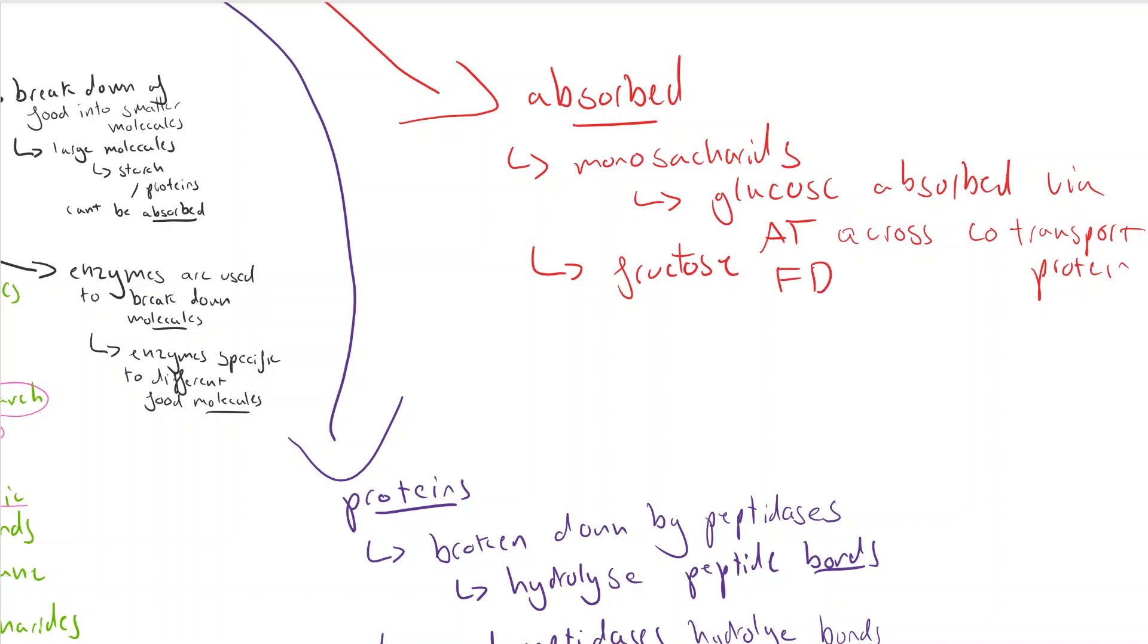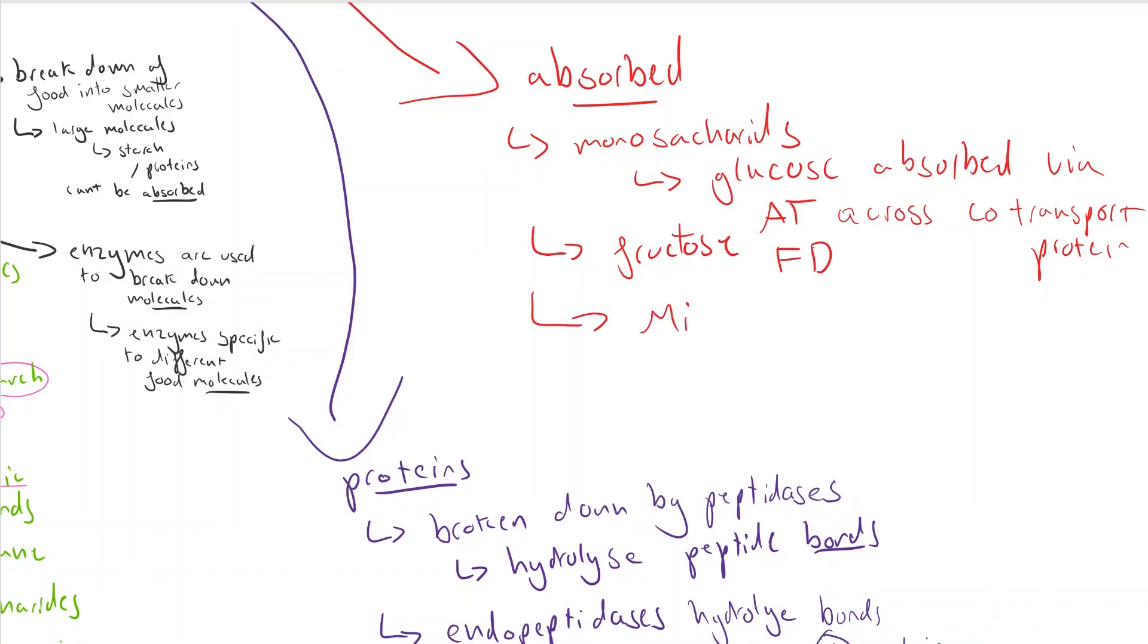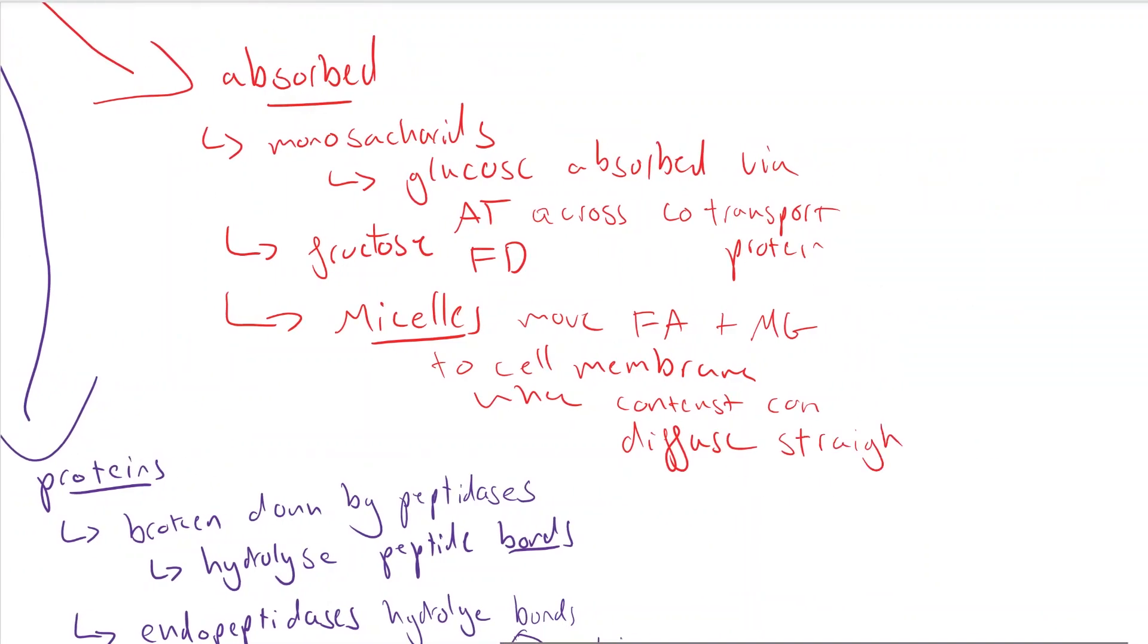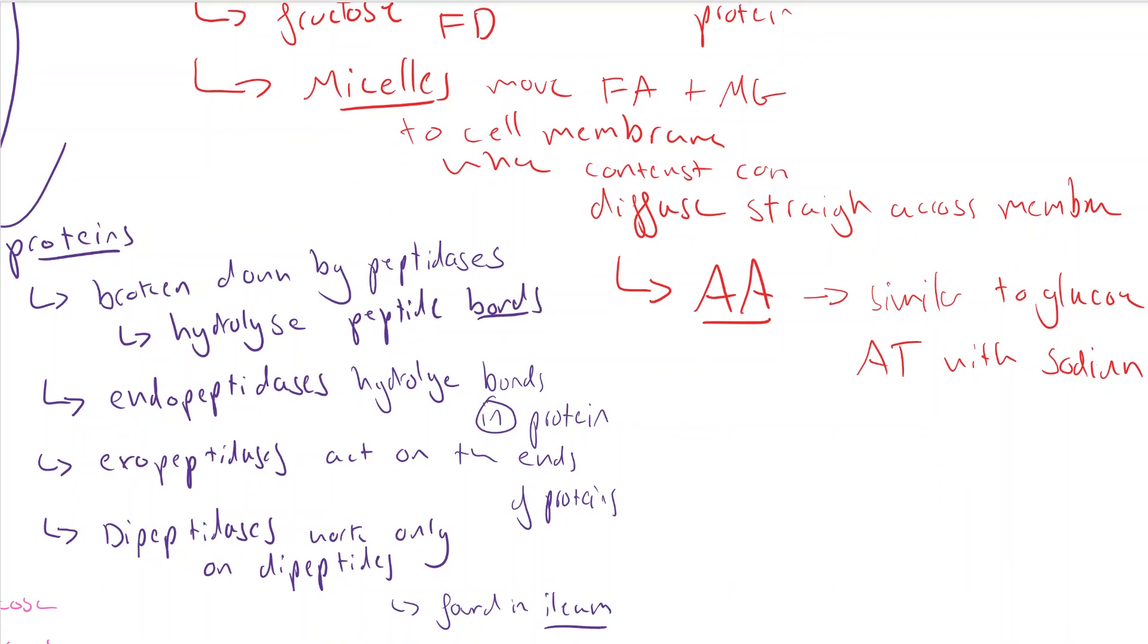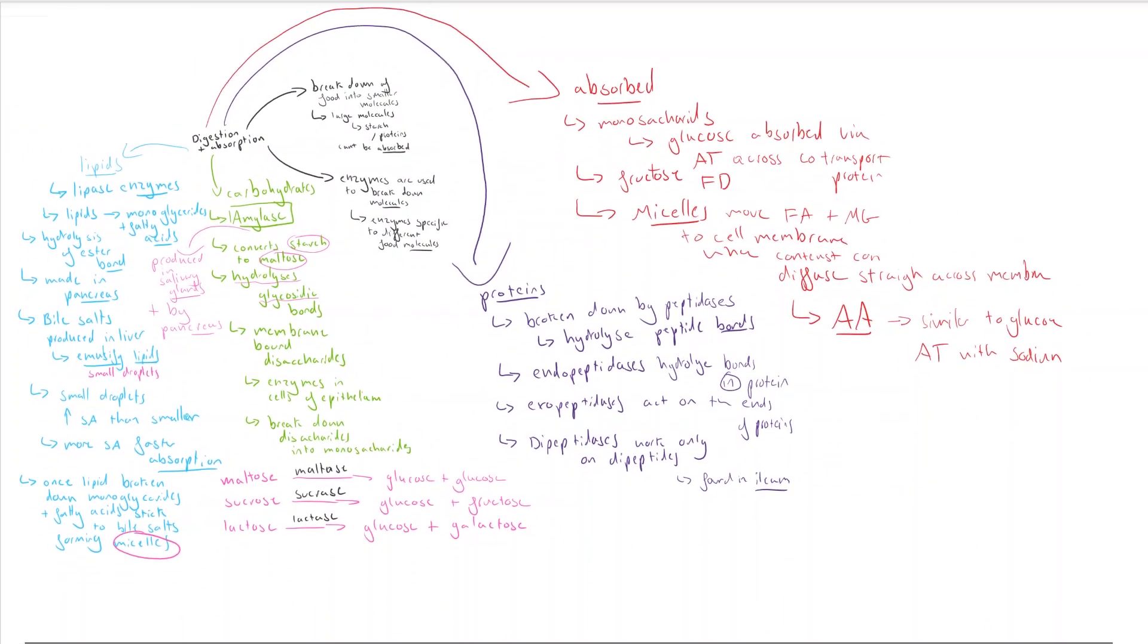Monosaccharides, such as glucose, are absorbed by active transport, usually across a co-transport protein with sodium. With lipids, micelles move the lipids towards the cell surface membrane, then release them near the membrane. Because fatty acids and monoglycerides are lipid-soluble, they can literally just diffuse across the membrane. Amino acids, the monomers of proteins, are moved across the membrane in a similar way to glucose—they're actively transported across via a co-transport protein with sodium.